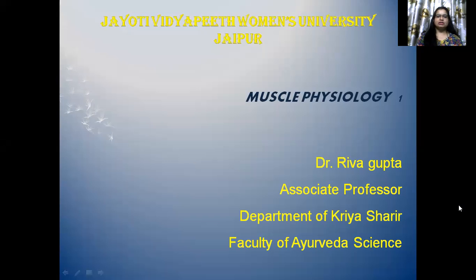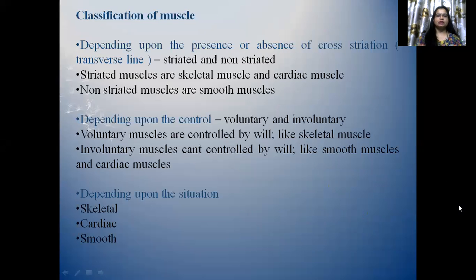Today's session is about Muscle Physiology, Part 1, for BMS First-Year Students. Classification of Muscle: depending upon the presence or absence of cross-screation or transverse line — iscrited and non-screited. Iscrited muscles are skeletal muscle and cardiac muscle; non-screited muscles are smooth muscles.